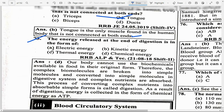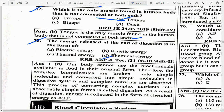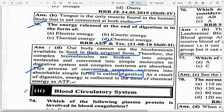The energy released at the end of digestion is in the form of option D — chemical energy. Our body cannot use biochemicals available in food in their original form; complex biomolecules are broken down into small, simple molecules in the digestive system. This process of converting complex nutrients into absorbable, simple form is called digestion. As a result of digestion, energy is collected in the form of chemical energy as ATP. This concludes the digestive system topic. The next lecture will cover the blood circulatory system.